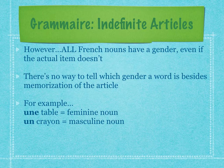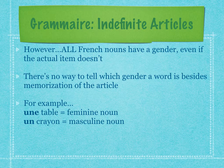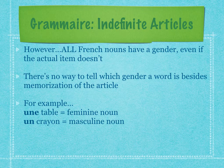Unfortunately, there is no way to tell which gender a word is besides just memorizing the article. There's only one rule in the entire language: if a word ends in -T-I-O-N, it's always feminine. For example, the word 'nation' is always une nation. But that's the only rule. Every single other word, you just have to memorize. I really suggest flashcards — it's probably the easiest way to do it.